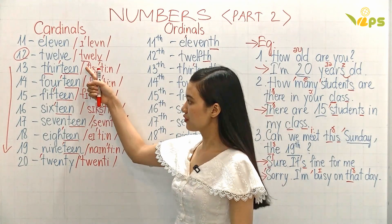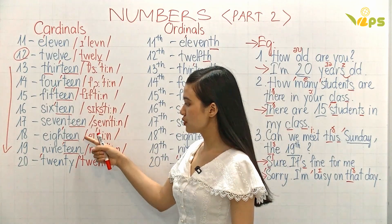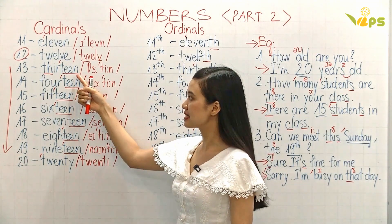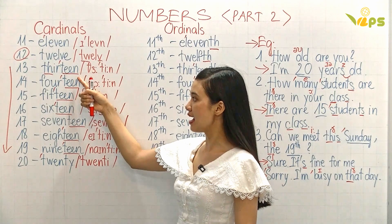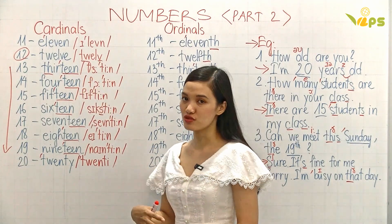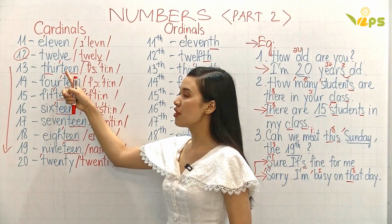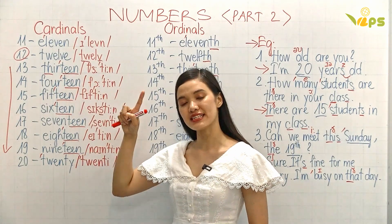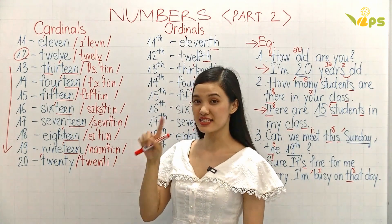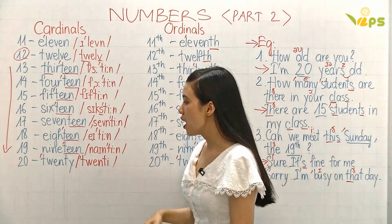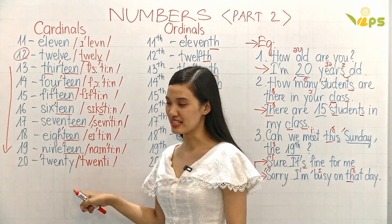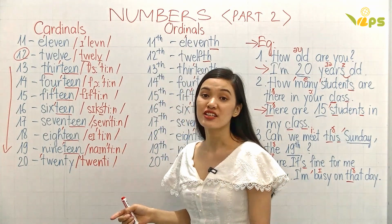Okay, number 13 to number 19 — we end with 'teen,' T-E-E-N, okay? Teen. And then we stress here: teen — 13, 14, 15, 16, 17, 18, 19. Okay, but number 20 — this is 20, not 'twenty.' 20.